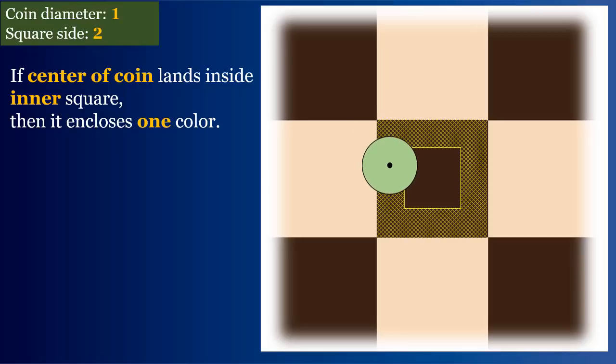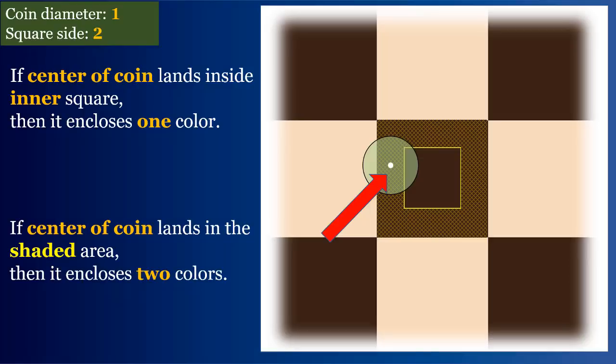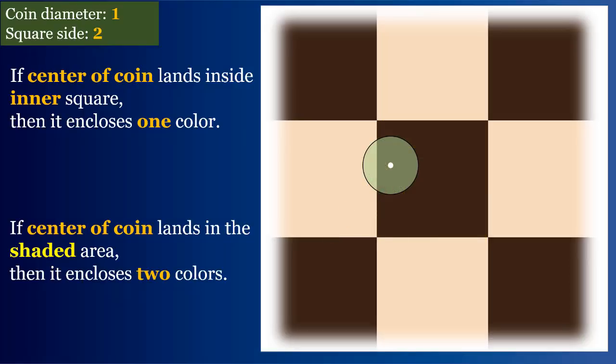then the coin would enclose just one color of the chessboard. And if the center of the coin lands in the shaded area, then the coin would cross one or more sides and as a result, it will enclose both colors of the chessboard, black and white.